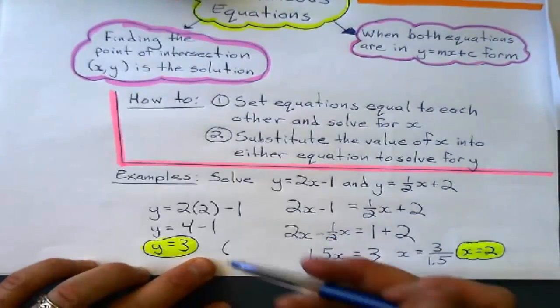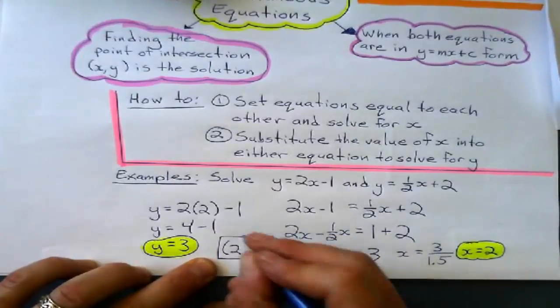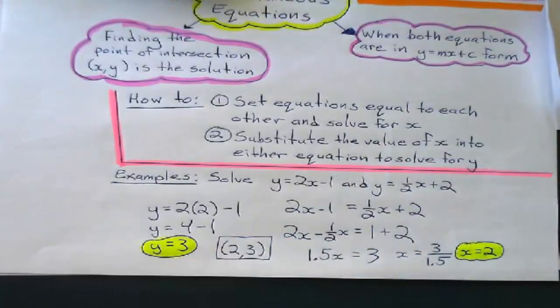That is where those two lines would come together. Now, write it like 2 comma 3. That's an ordered pair. Box it up. Highlight it. It's good.